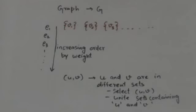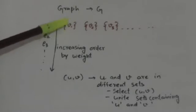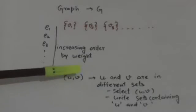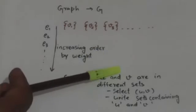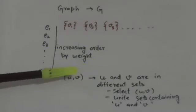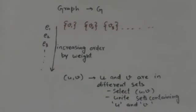Suppose we have to find the minimum spanning tree of a weighted graph G by Kruskal's algorithm. First, we will write all edges of graph G in increasing order by weight, and we will put each vertex of graph G in a separate set. Then we will scan edges of graph G written in increasing order by weight. If we encounter an edge UV such that vertex U and vertex V are in separate sets, we will select this edge UV to include in the minimum spanning tree, and we will unite the sets containing vertex U and vertex V into a new set, which will be the union of the set containing vertex U and the set containing vertex V.